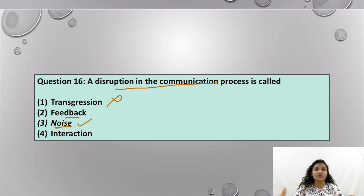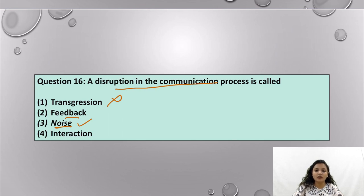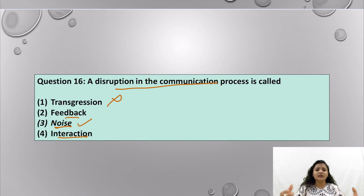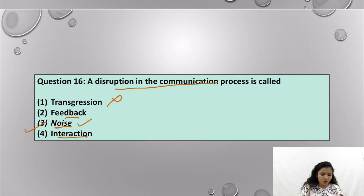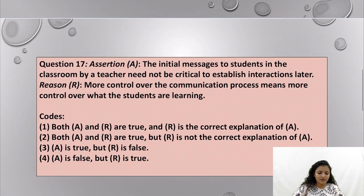Noise distorts the intent of the message and brings in barriers of communication. The receiver may understand something different from what the sender intended because of noise. Interaction, on the other hand, is how communication happens between sender and receiver. So noise is the correct answer for question 16.